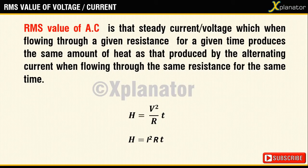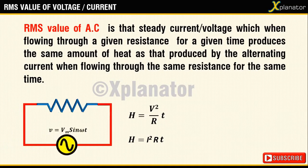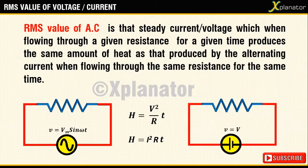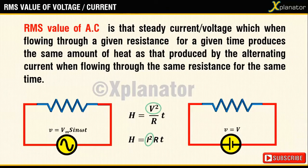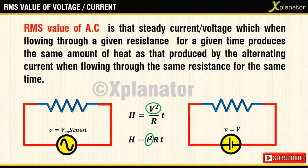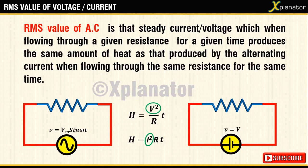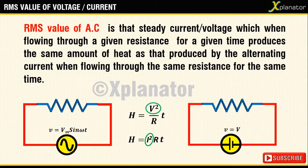So I am going to consider both the waves AC and DC, square them up because we are talking of v² or i², and compare their areas to see at what magnitude both the areas match up.